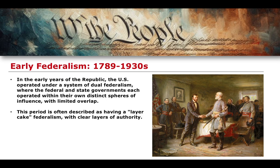I want to begin by looking at this particularly long period of U.S. history that takes us from the start of the U.S. Constitution all the way up to the 1930s, the Great Depression. This is what was known as a period of layer cake federalism, because the U.S. operated under a system of dual federalism, where the federal and state governments each operated within their own distinct spheres of influence, with very, very limited overlap.